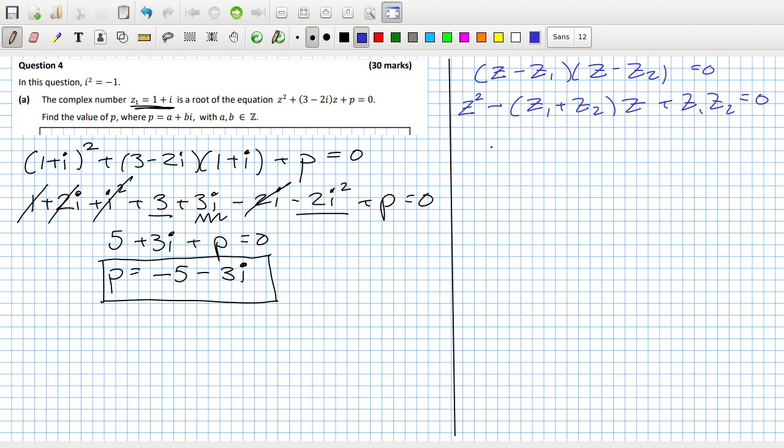So that means if you were just to rewrite this with the minus taken out, z squared minus (-3 + 2i)z plus p equals zero. You can see that z1 plus z2 would equal -(-3 + 2i), and z1 times z2 would equal p.